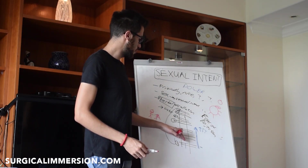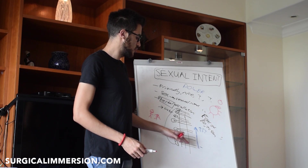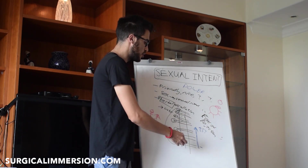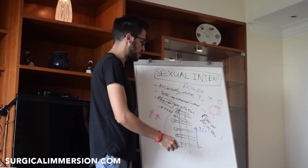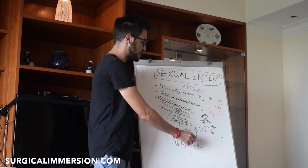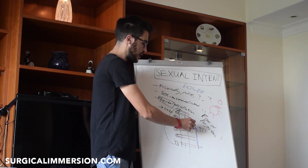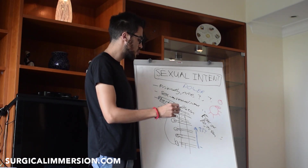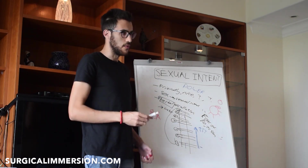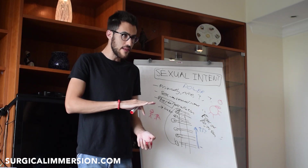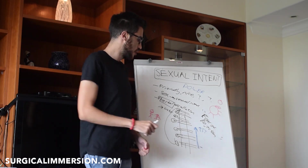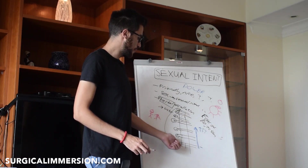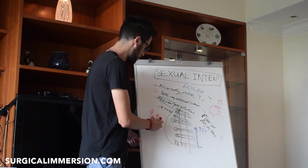Going back to the verbal escalation ladder — you need to write down your ladder with all the different levels, write down your releases, and understand that the higher you go the more you may want to release. Other times, practice just letting it simmer without ever releasing and see what happens.